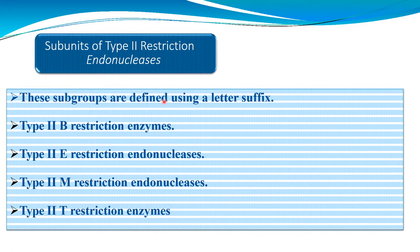Subgroups of Type 2 restriction endonucleases are defined using a letter suffix. Type 2B and Type 2T are referred to as restriction enzymes, whereas Type 2E and Type 2M are represented as restriction endonucleases.